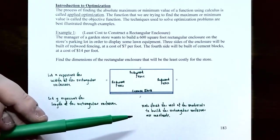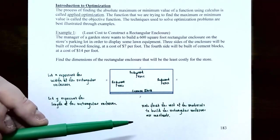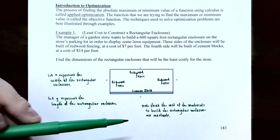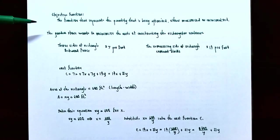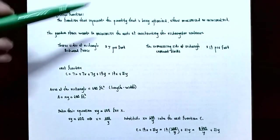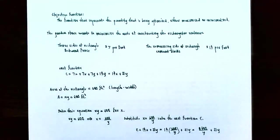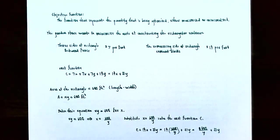The things not changing in the problem are the cost of materials: the $7 per foot for redwood fencing and the $14 per foot for cement blocks. Now that we know the variables, let's talk about the objective function — the function representing the quantity to be optimized. The garden store wants to minimize the cost of constructing the rectangular enclosure, so we need a function that represents that cost.